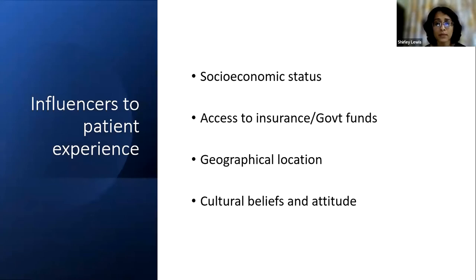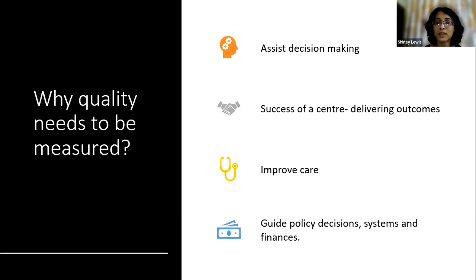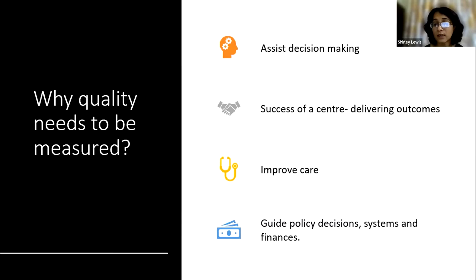If you consistently deliver a good level of care, outcome measures and survival outcomes at the national level may be compliant with evidence. There are also many different influences on patient care — socioeconomic factors, access to funds, jobs. Quality needs to be measured because it helps in right decision-making, helps you see what are the drivers for success, and the more you measure, the more there is impetus to improve. These activities also guide policy decisions, systems, and finances.